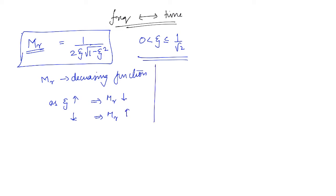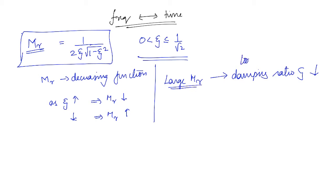For a system which has a large resonant peak — large Mr — the damping ratio zeta will be low. So large resonant peak implies low damping ratio. Depending on the resonant peak, which is a frequency domain specification, we are able to get some idea about the damping ratio.